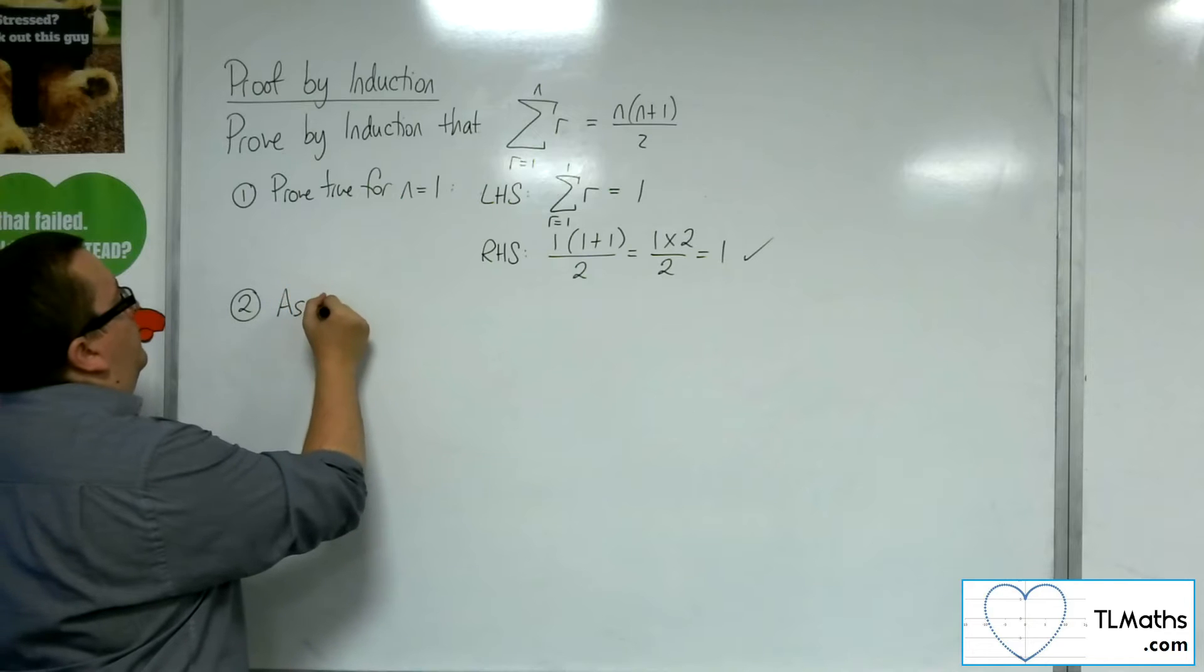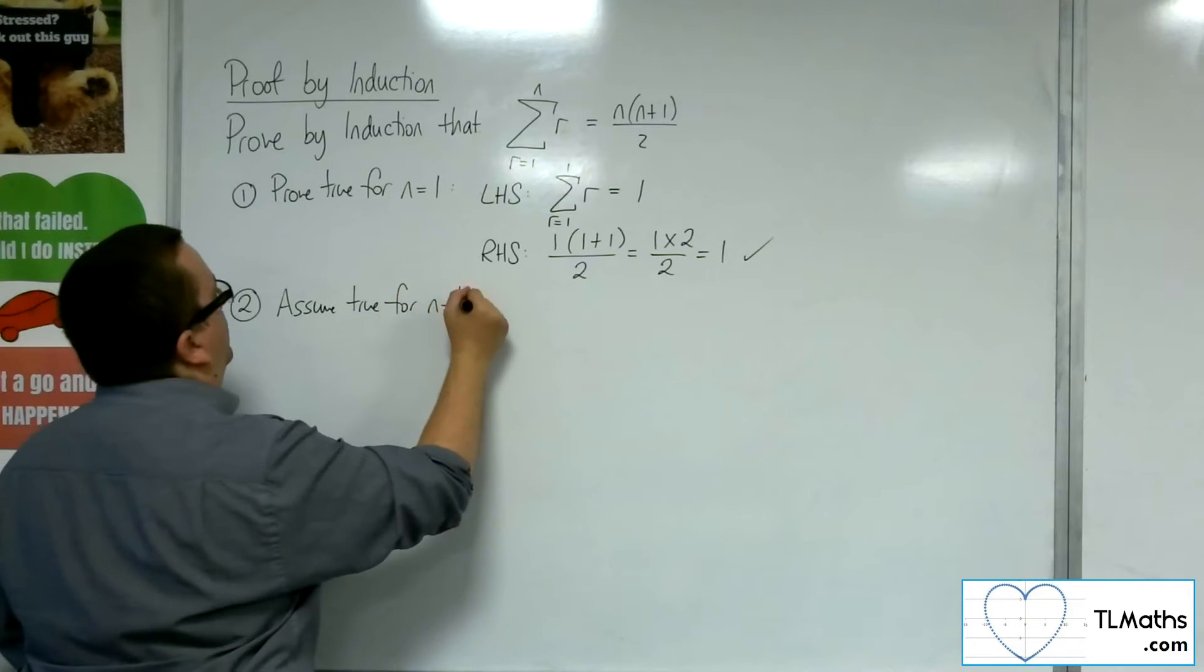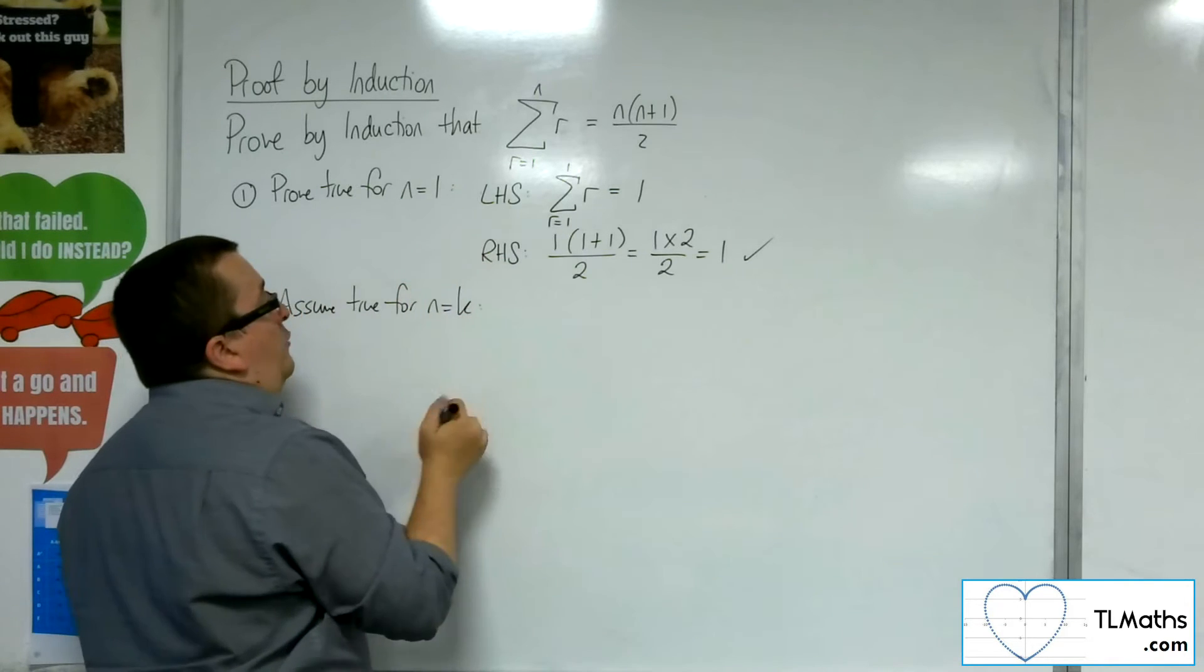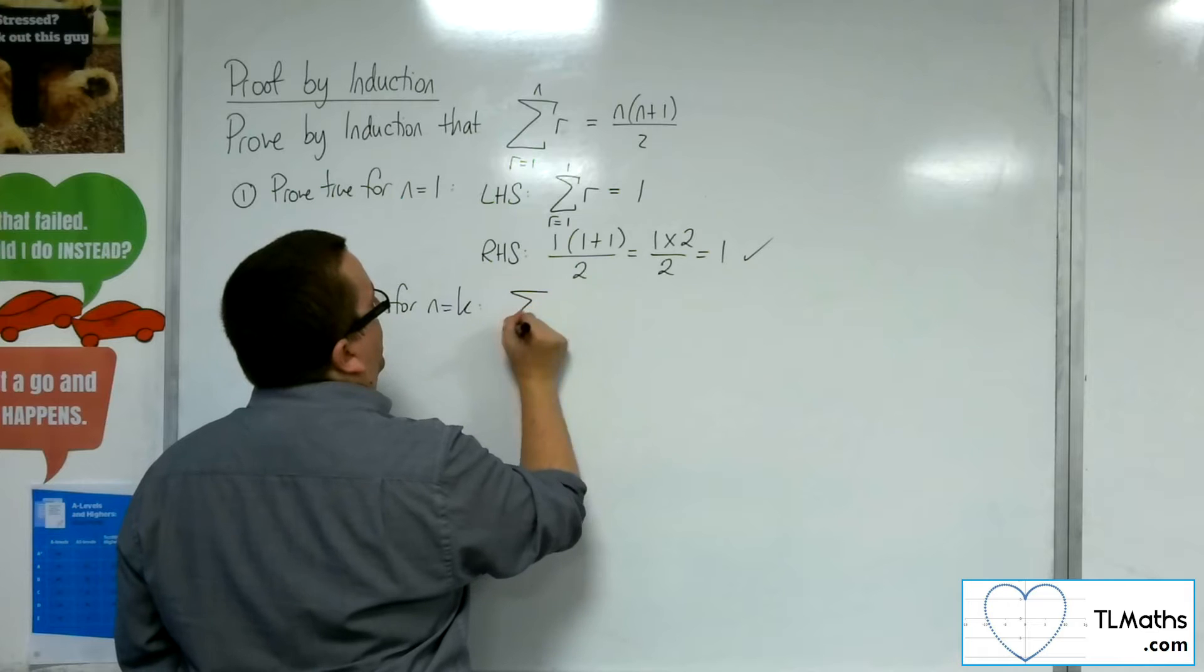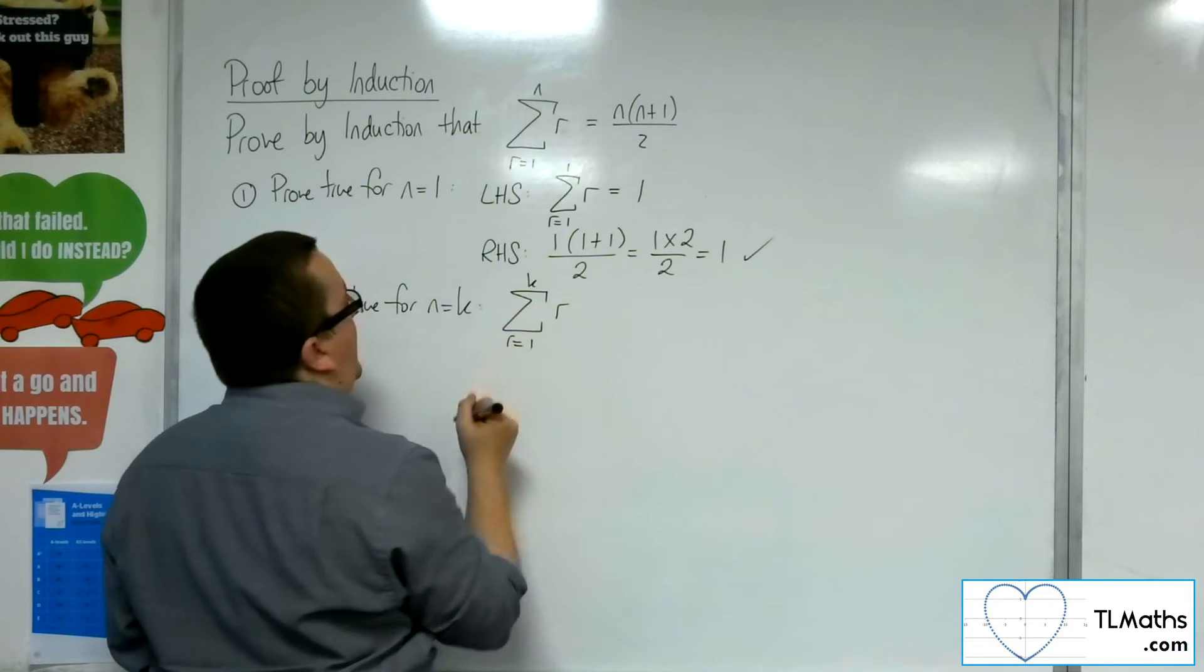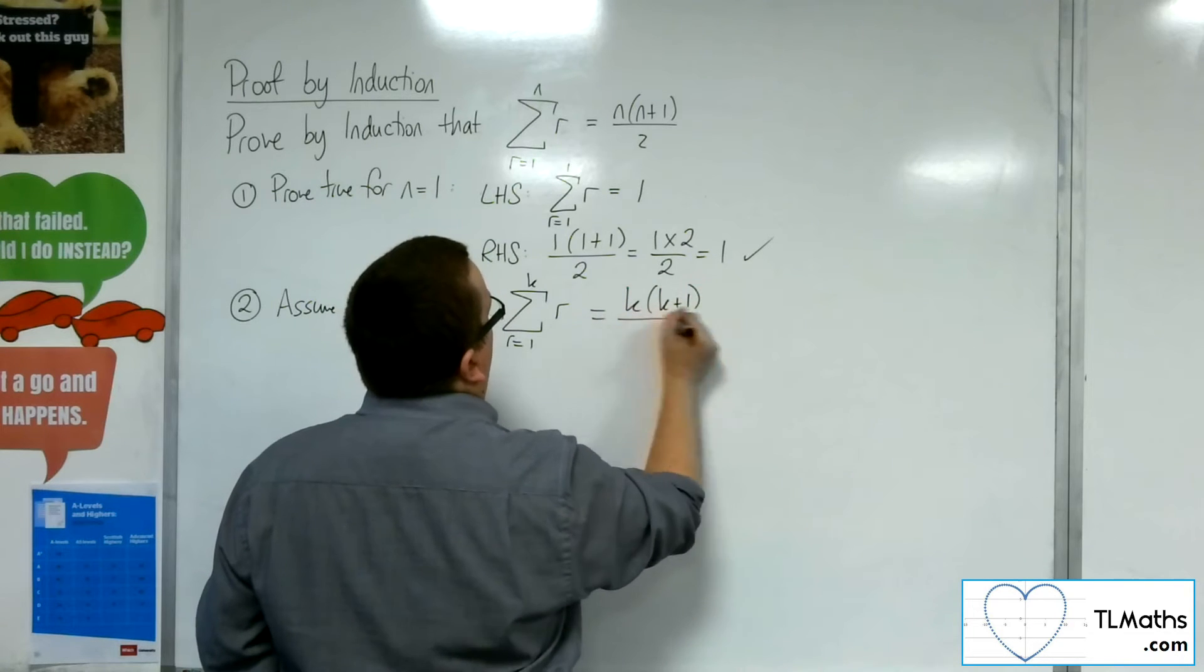Assume true for n equals k. So what we need to do here is we just rewrite the original statement, but we replace the n with k. So we're going to assume that this is true.